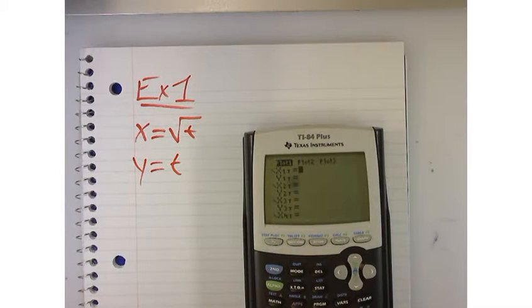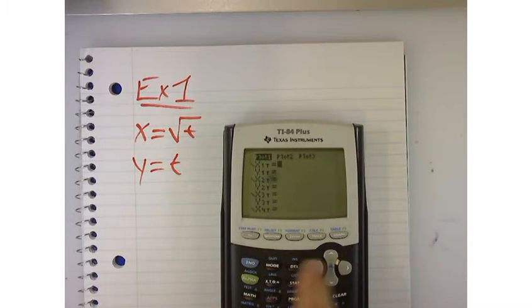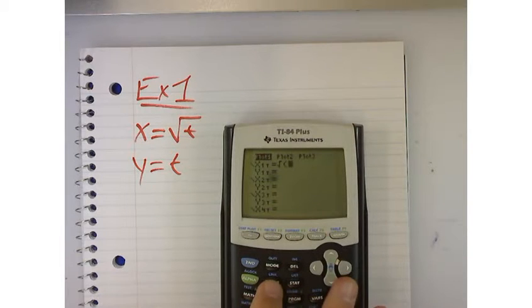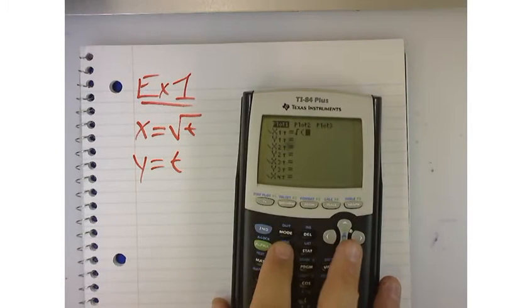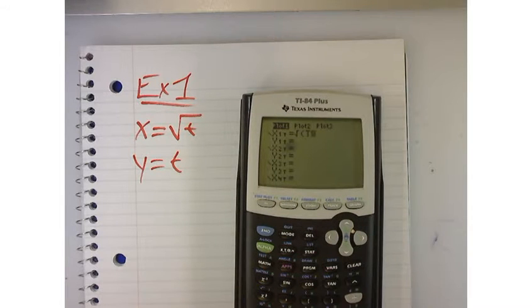Now, to enter that in your calculator, what you want to do is you would just go to x equals, and then just do the square root button, like you normally would. And then when the button that says that we normally hit for x, you would just hit that, and now it changes it to the letter t.